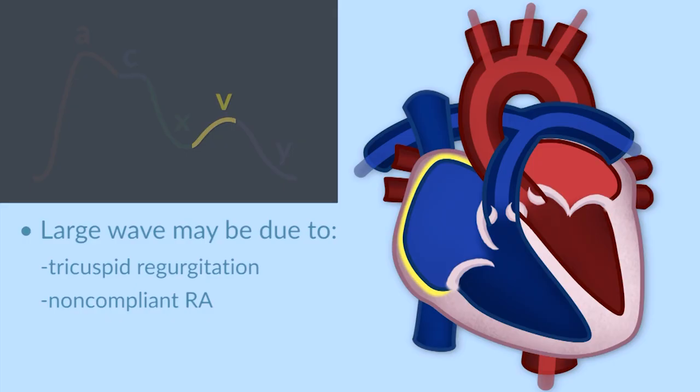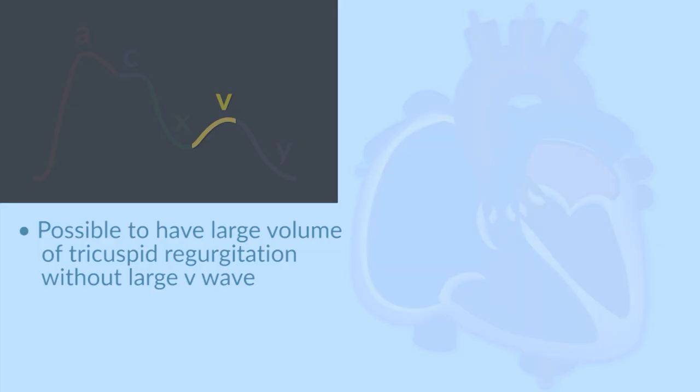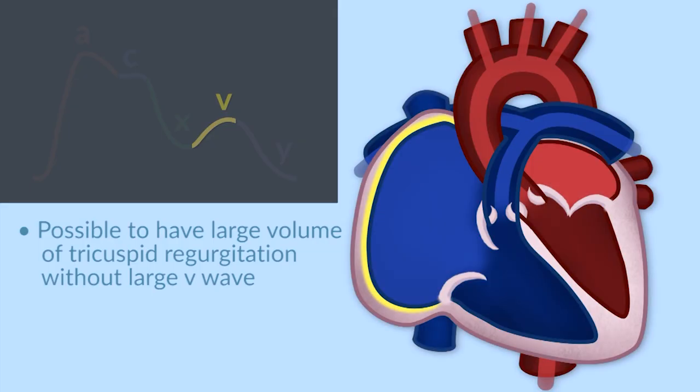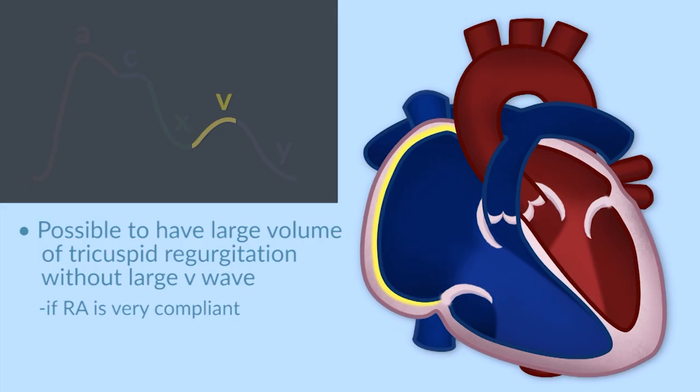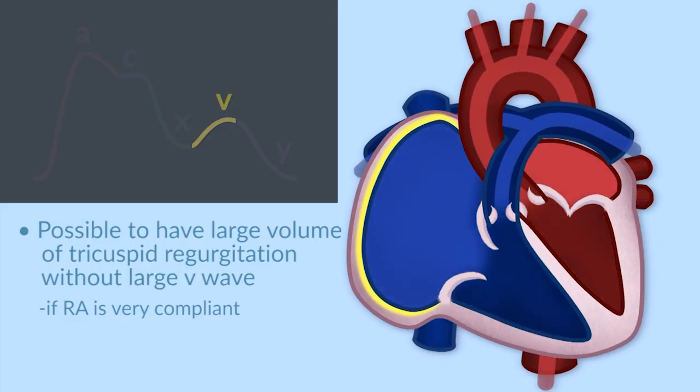Another thing to remember about V waves is it's possible to have a big volume of tricuspid regurgitation without having a big V wave. And the reason that would happen is that if the right atrium were very, very compliant, so if a patient had tricuspid regurgitation for a very long period of time and their right atrium had gotten distended and very compliant,